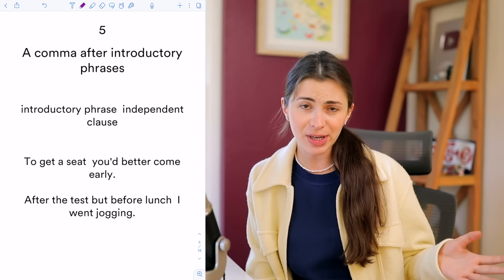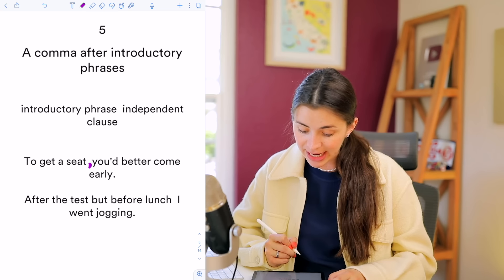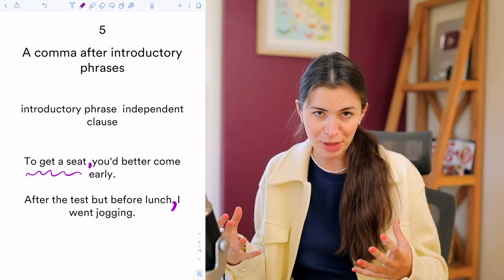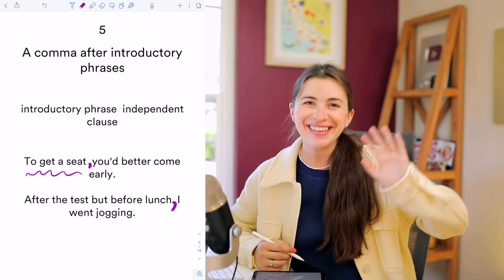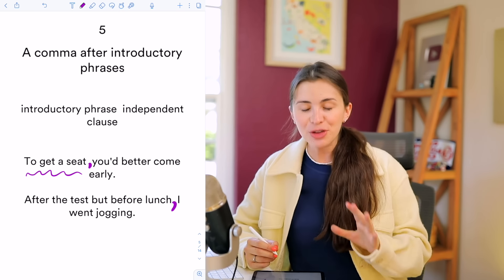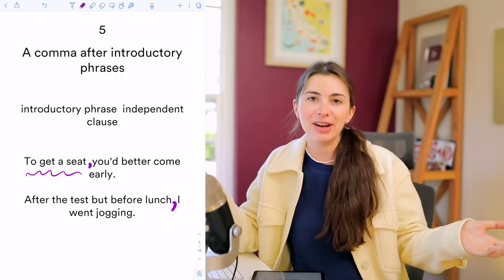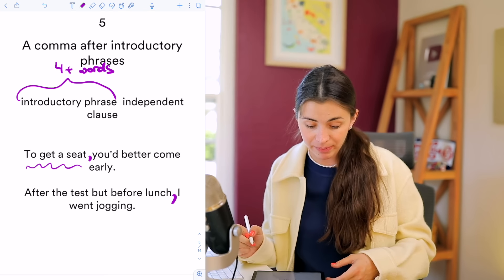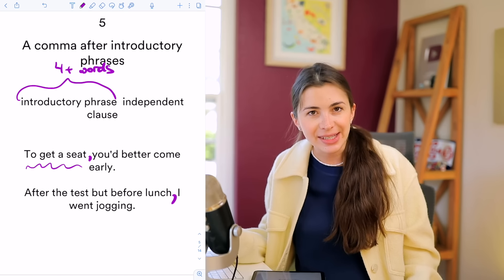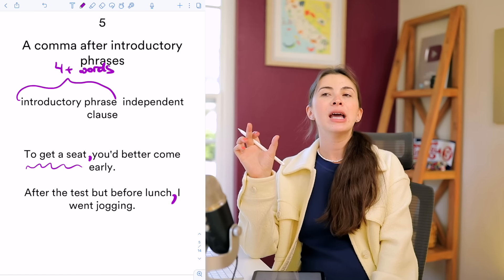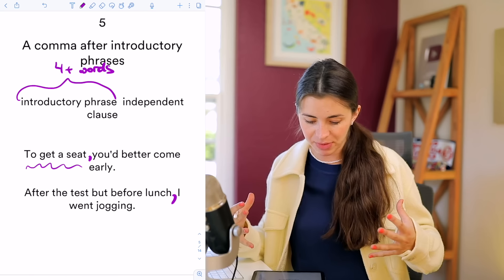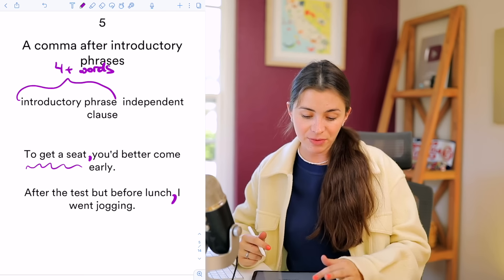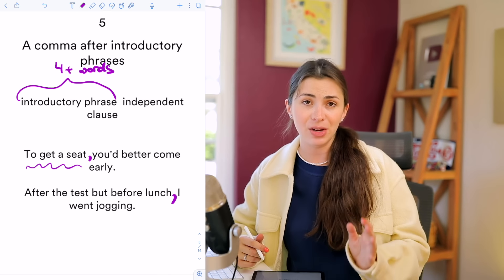Another case for commas is when you have an introductory phrase. Examples: 'To get a seat, you'd better come early.' or 'After the test but before lunch, I went jogging.' An introductory phrase doesn't have its own subject and verb — it just sets the stage for the main part. The rule of thumb: if your introductory phrase is four or more words, separate it with a comma. If it's just two words — like 'to sit' — no comma is needed, unless you want to strongly emphasize it.